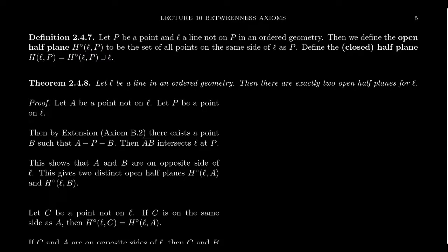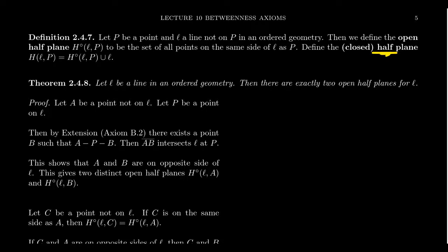We can also define the closed half plane, sometimes just called the half plane, denoted H(L, P) — the little circle is omitted. The closed half plane is the open half plane union the line L. The open half plane doesn't include the line; the closed half plane does. We're using terms like open and closed half plane, and the word 'half' suggests there are two of them. Because of the plane separation theorem, being on the same side of a line is an equivalence relation, so these open half planes are equivalence classes. But why 'half'? Are there only two half planes?